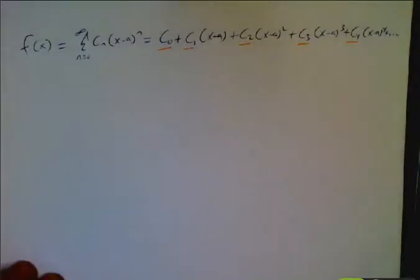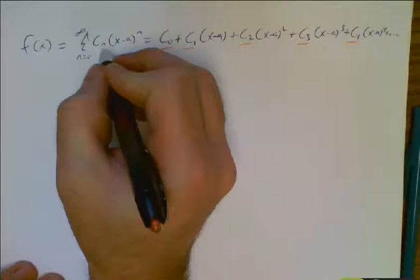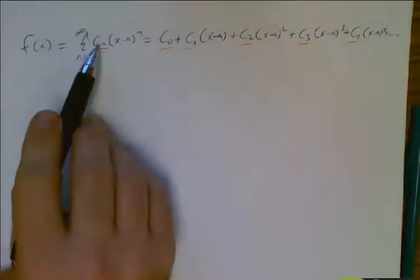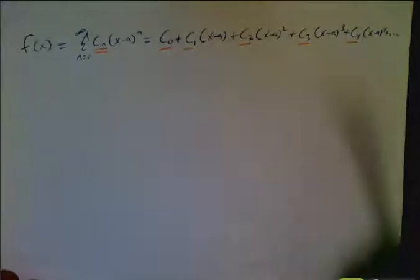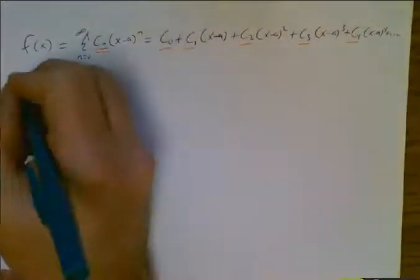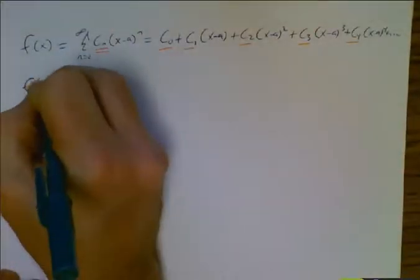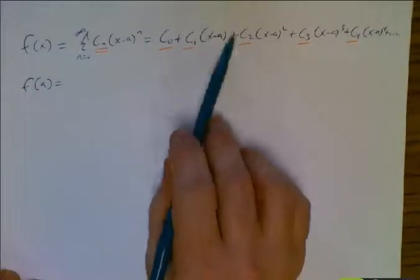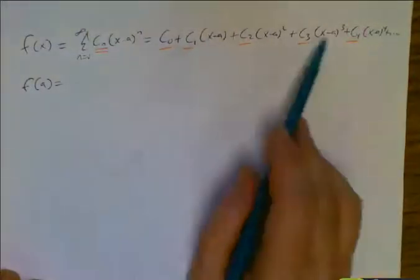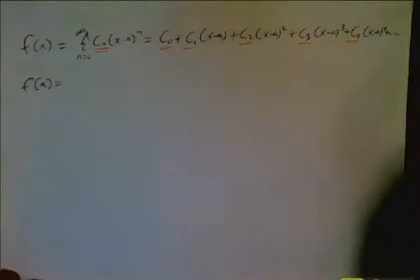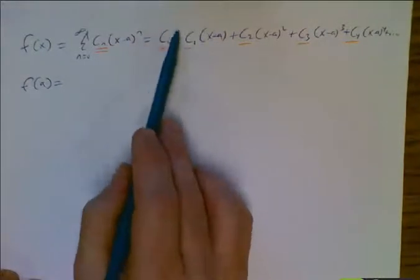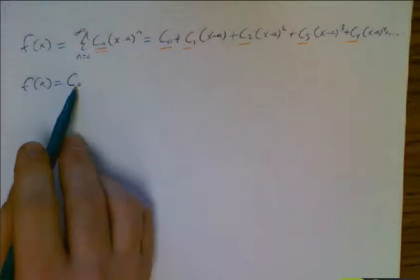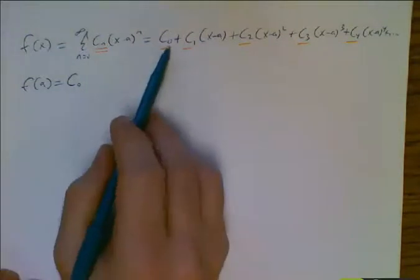So the first thing we're going to look at is trying to find a way to come up with a formula for our constants. And this is what we do. If this is f of x right here, I'd like to know what f of a is. So if I were to plug in a for all my x's, all these terms, this infinite number of terms, go to zero except for this first constant. So my first term here, f of a, is my initial constant, c sub zero.